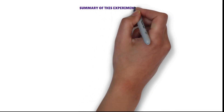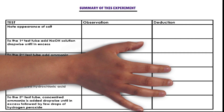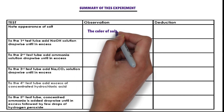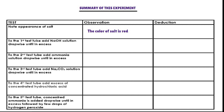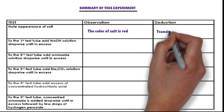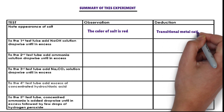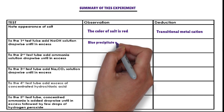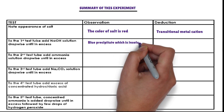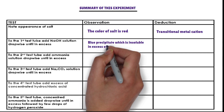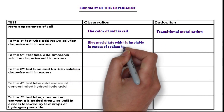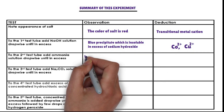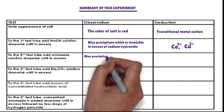Summary of this experiment. Observation: the color of the salt is red. The red color of salt indicates that the cation present in the salt is a transition metal cation. To the first test tube, sodium hydroxide is added dropwise. The cation that forms a blue precipitate with sodium hydroxide, insoluble in excess, is cobalt-2 ion or copper-2 ion.